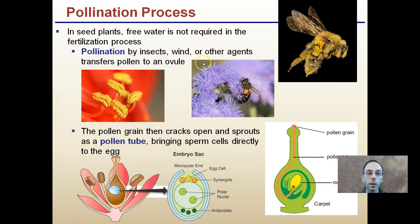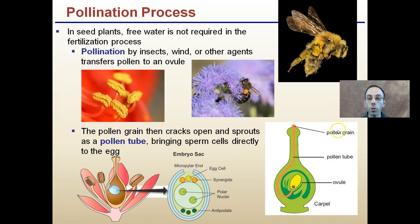The pollination process: in seed plants, free water is not required in the fertilization process. Pollination by insects, wind, or other agents transfers pollen to an ovule. The pollen grain then cracks open and sprouts as a pollen tube, bringing the sperm cells directly to the egg. The pollen lands on the sticky stigma and travels down to reach the ovule. So just because the pollen is transferred to the stigma doesn't mean it's automatically pollinated — it needs to survive and travel that entire distance.